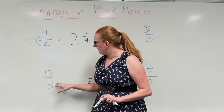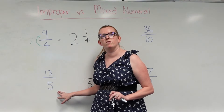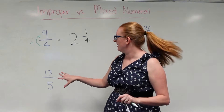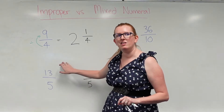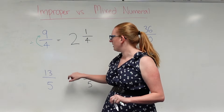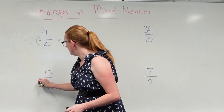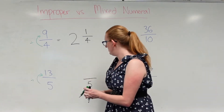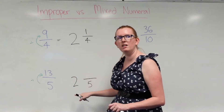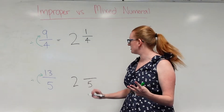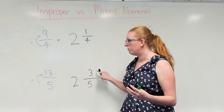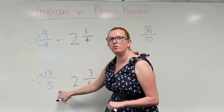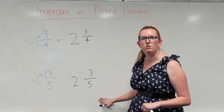So here I've got 13 over five. If it were pizzas again — cut into fives and I ate 13 of them — I'm going to divide. How many fives go into 13? Two, because two fives are ten. So that means I've got three left over, and that three becomes the numerator of my proper fraction next to it. So 13 over five is the same as two whole plus three over five.